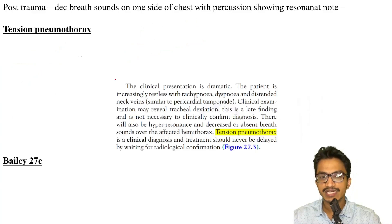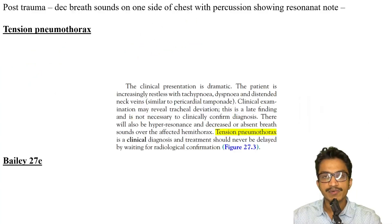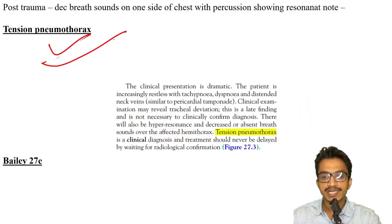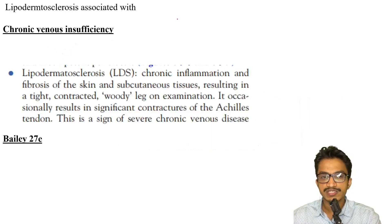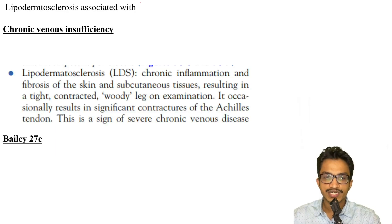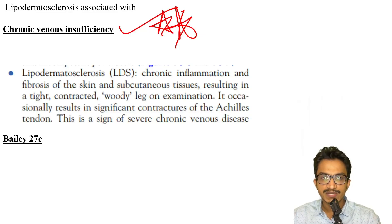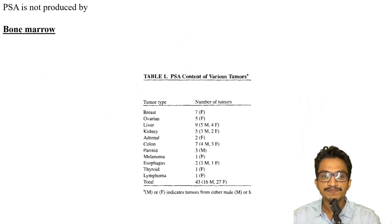A patient with decreased breath sounds on one side and resonant percussion note is very straightforwardly pointing towards tension pneumothorax — an easy question requiring no further discussion. Lipodermatosclerosis is also straightforward — it is associated with chronic venous insufficiency.